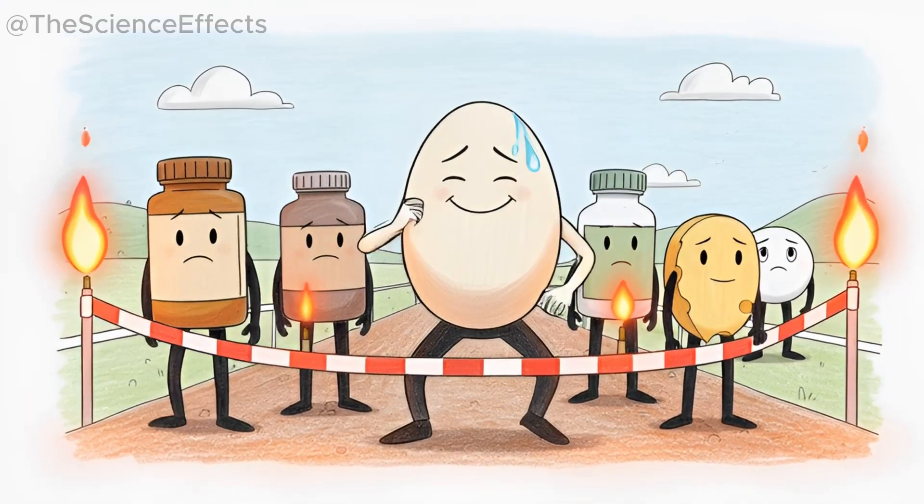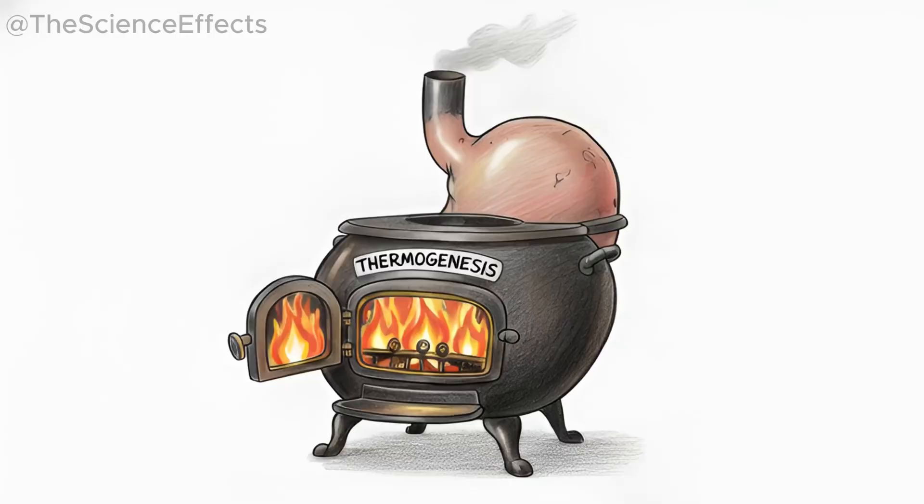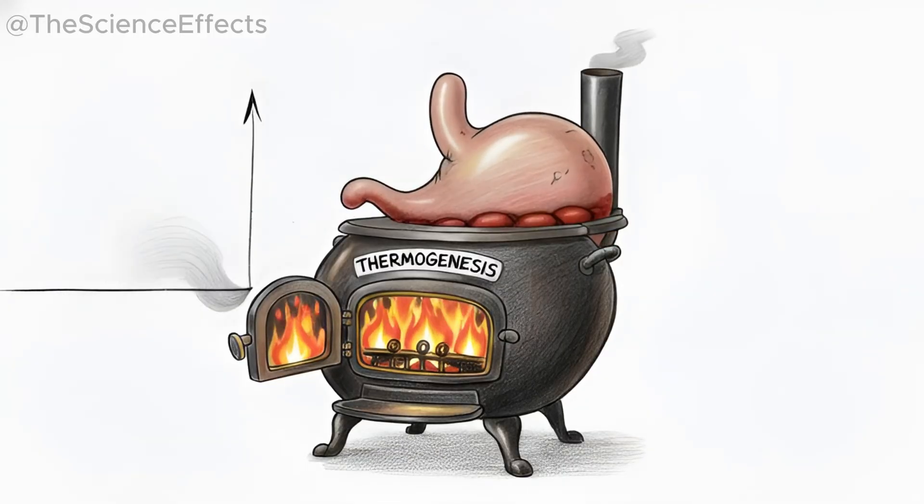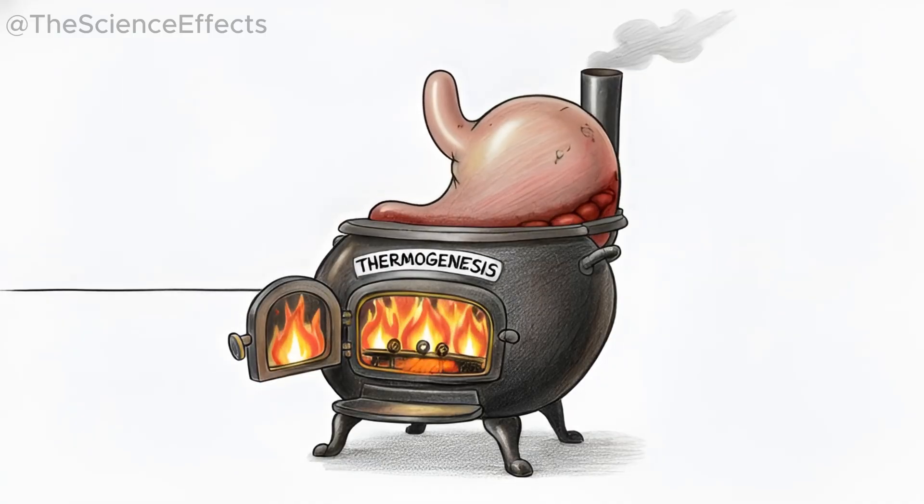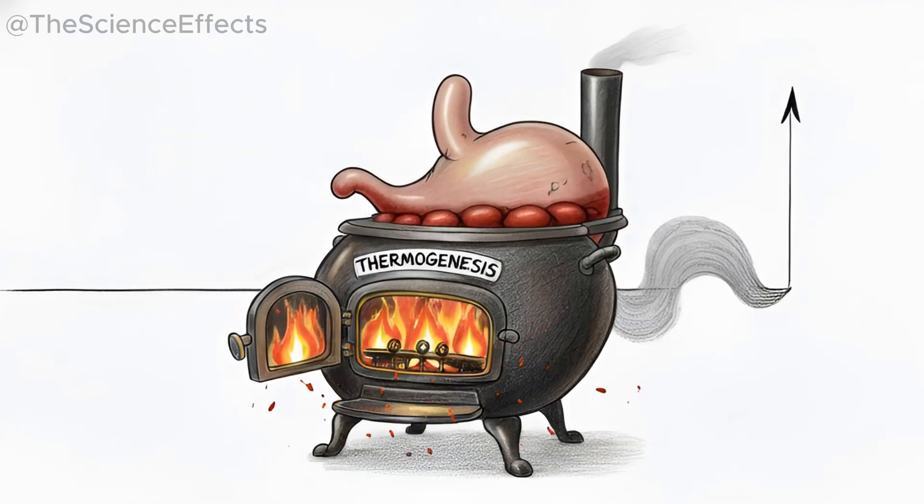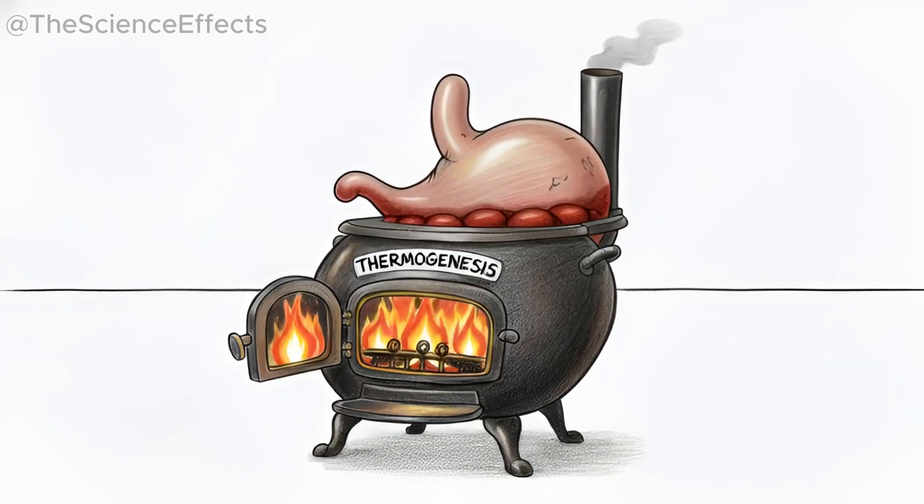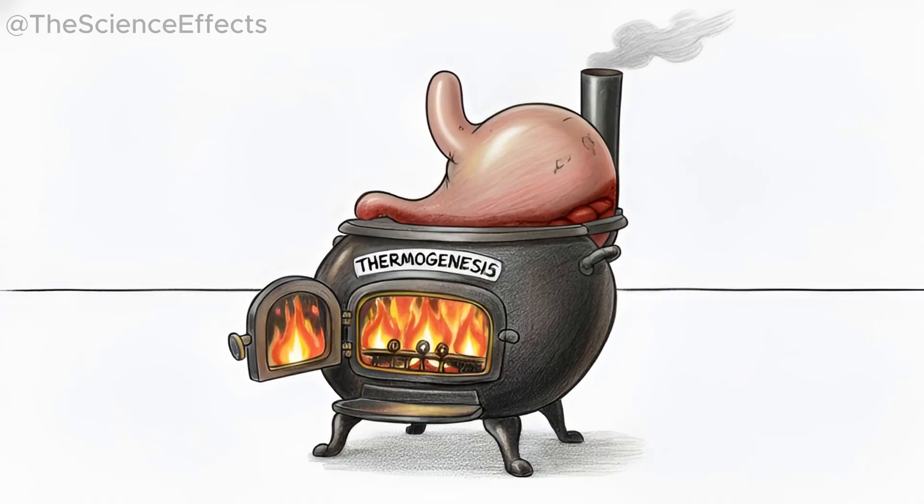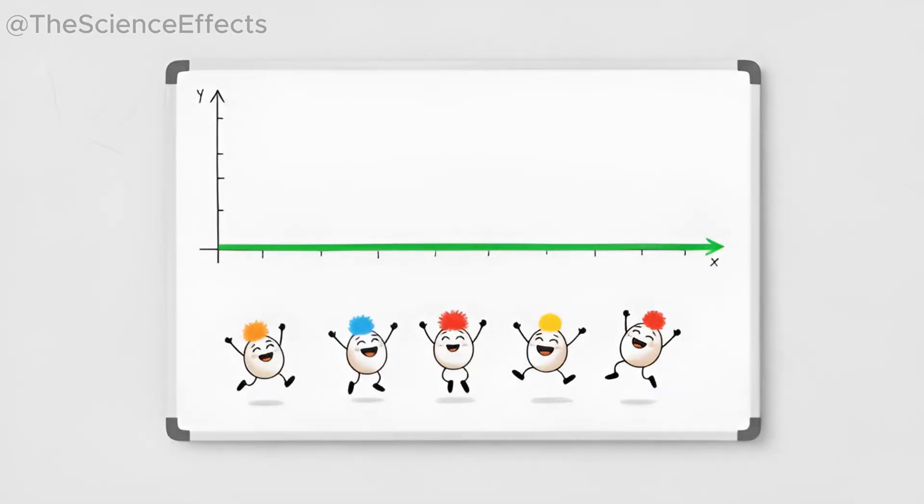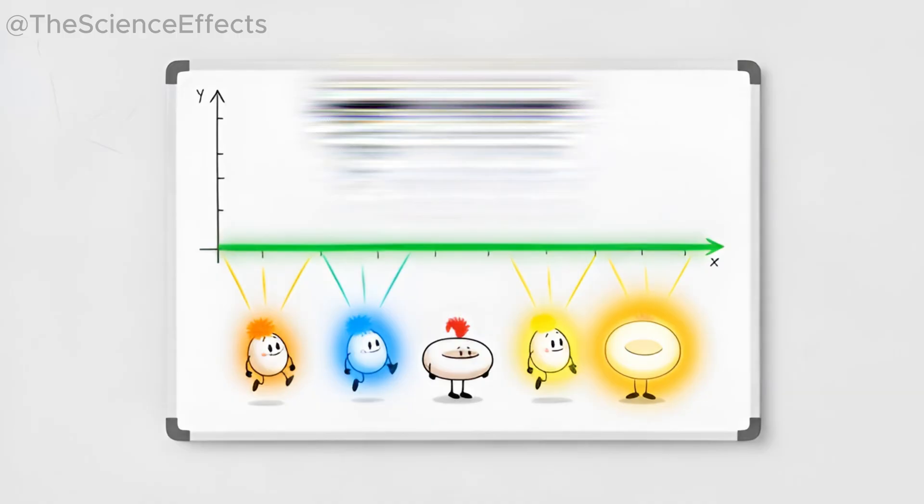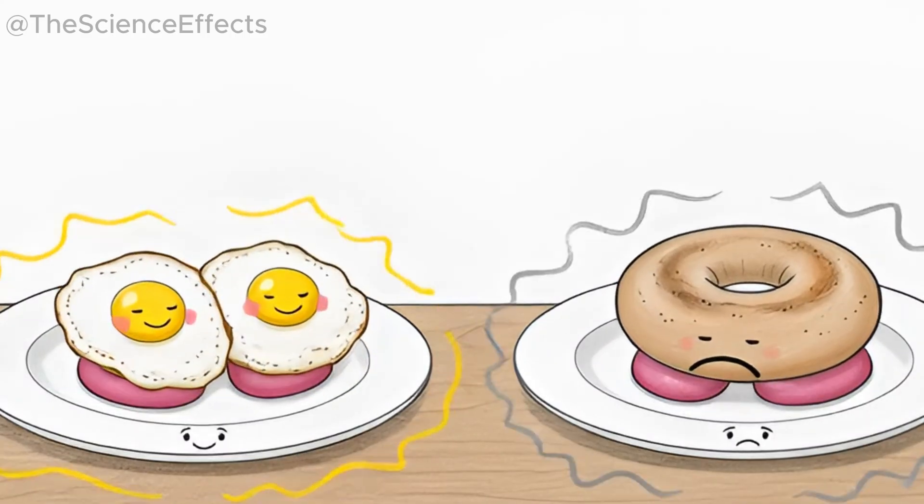Metabolism and appetite: protein boosts thermogenesis, a fancy word for your body burns more calories processing protein. In simple terms: your stomach is a furnace, protein makes it burn hotter. Eggs also stabilize blood sugar by slowing digestion. This means fewer cravings and a more stable energy curve. This is why two eggs in the morning reduce daily calorie intake, as shown in studies comparing egg breakfasts to bagel breakfasts.